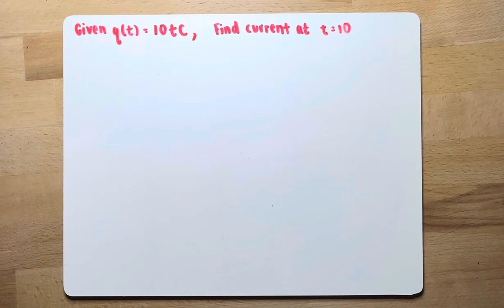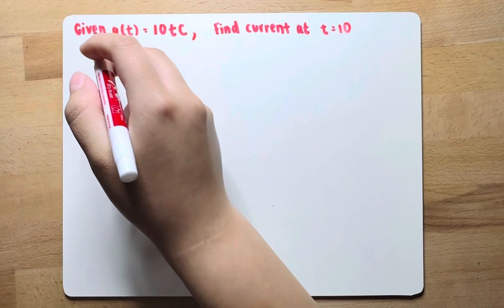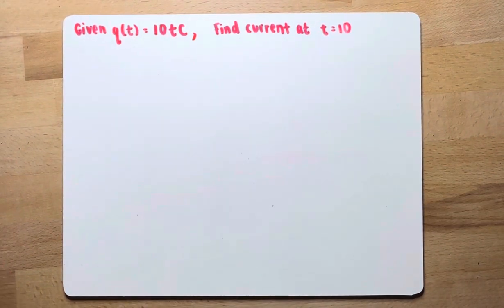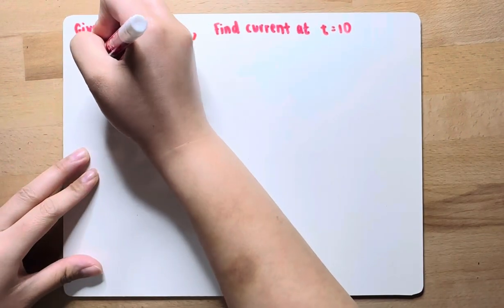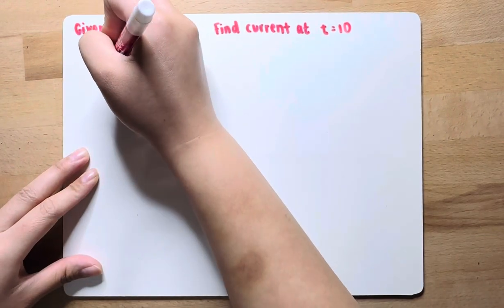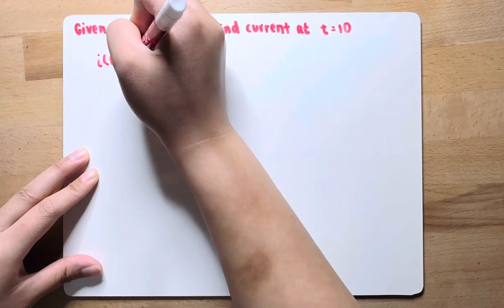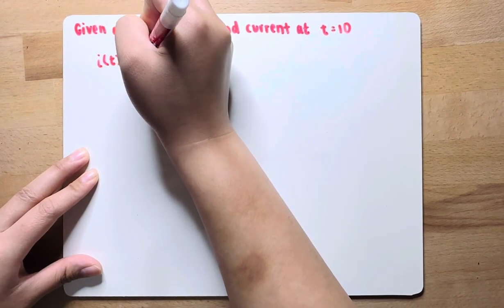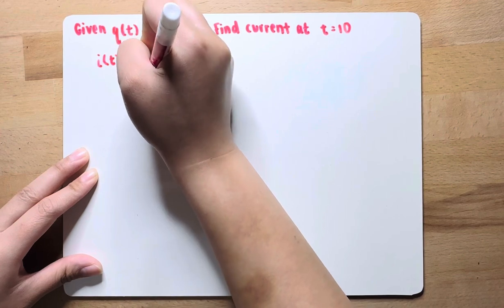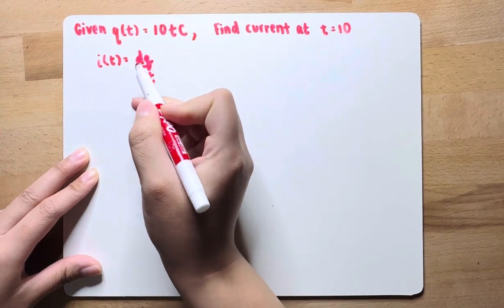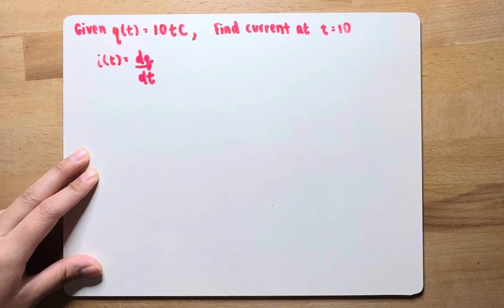In this problem, we're given this function for charge, and we want to find current at t equals 10. You need to recall that current is equal to the rate of change of charge over time — this is the formula for current.